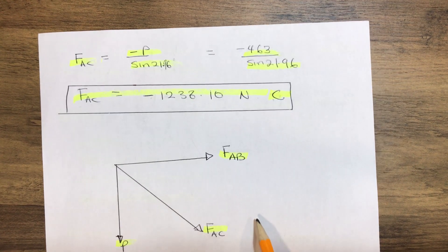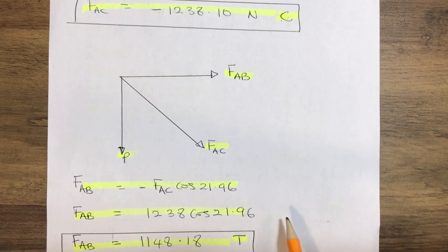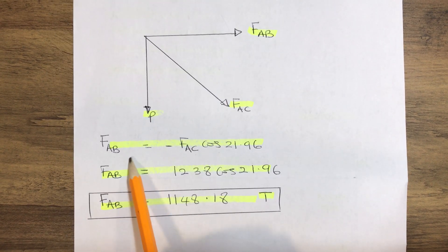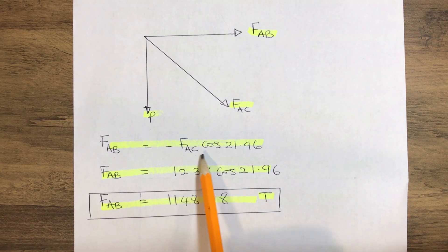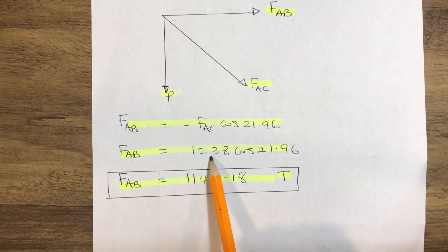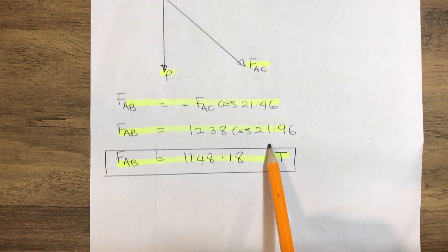So now let's go ahead to find our FAB. To find our FAB, our FAB equals minus FAC cosine 21.96, so therefore FAB equals 1238 cosine 21.96.